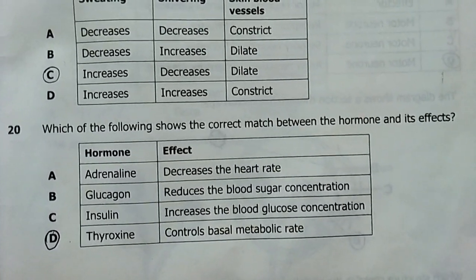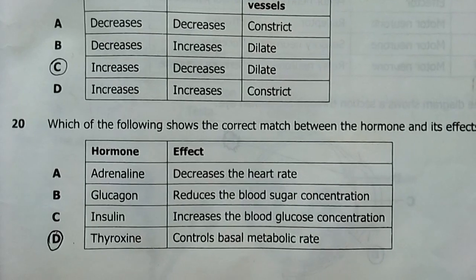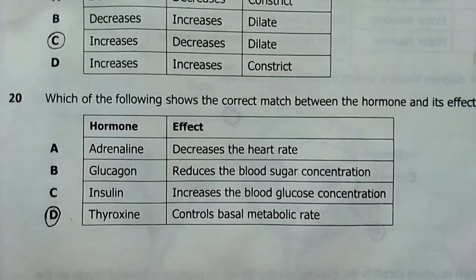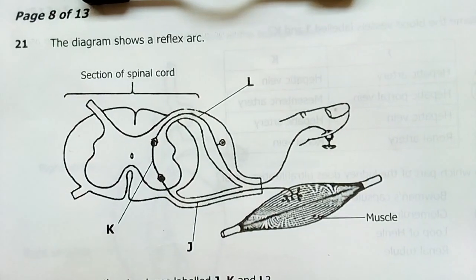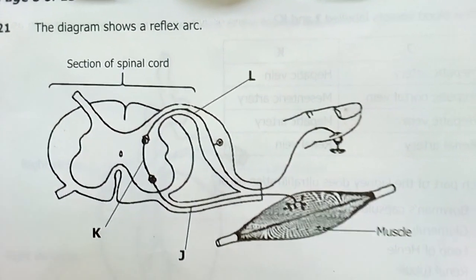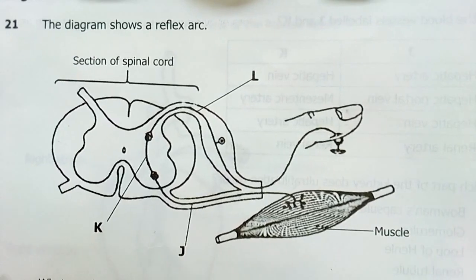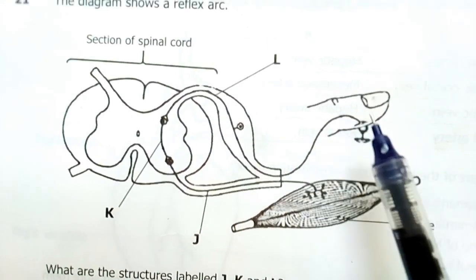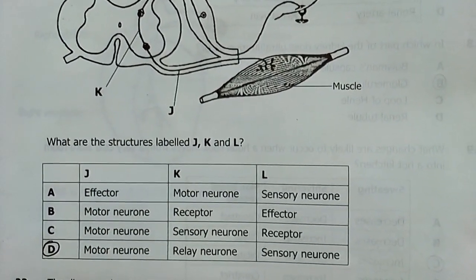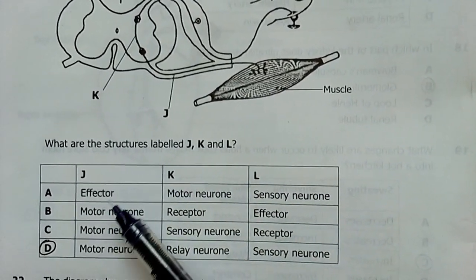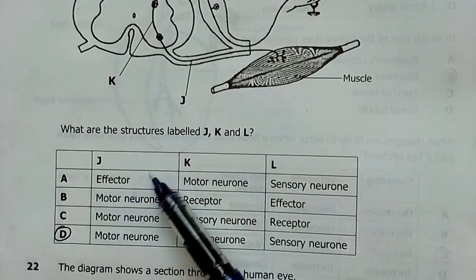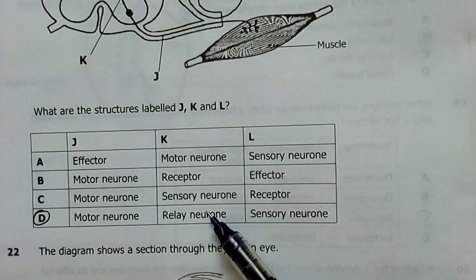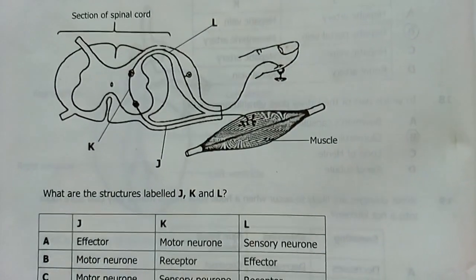Let's continue to go all the way up to 40. The diagram shows a reflex arc. Section of the spinal cord. I can already tell to say this is an effector, which is J, a relay or interneuron, then the sensory neuron. What are the structures labeled J, K, L? J is my effector, or motor neuron. K is my relay or interneuron, then finally sensory neuron is my L. So the answer there is D.